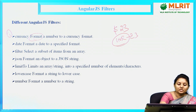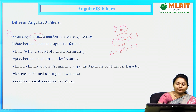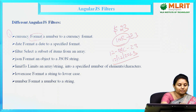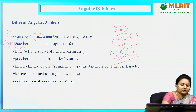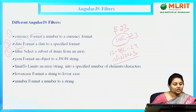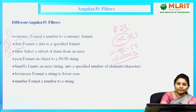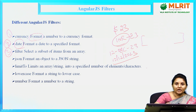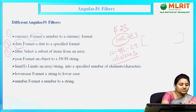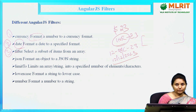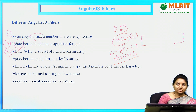The date filter formats a date to a specific format. As I told you, suppose if I just want '12 DEC 23' or '12/12/2023', these particular formats will be assigned using the date filter. The third one is the filter filter — it is used to select a subset of items from an array. If you have multiple array elements, it will take only a part of the array, just like how we use filters in Excel.